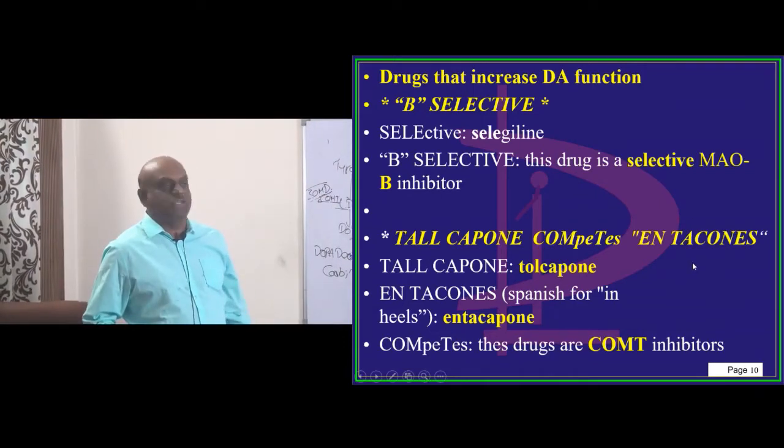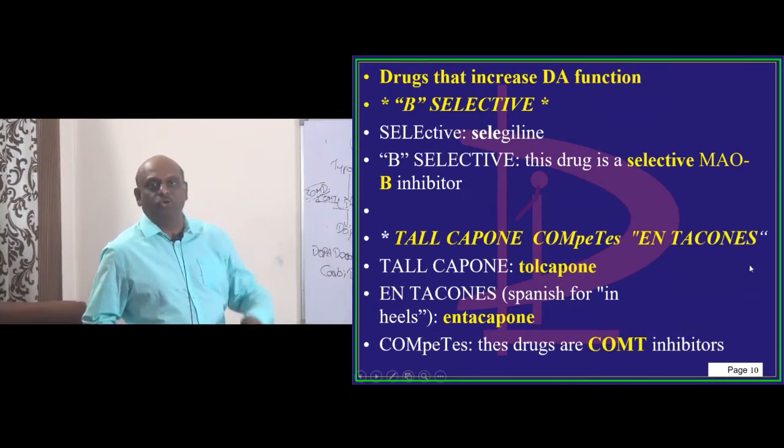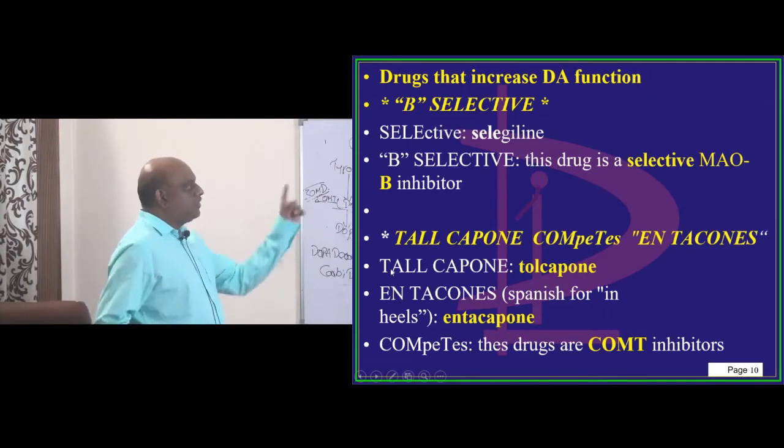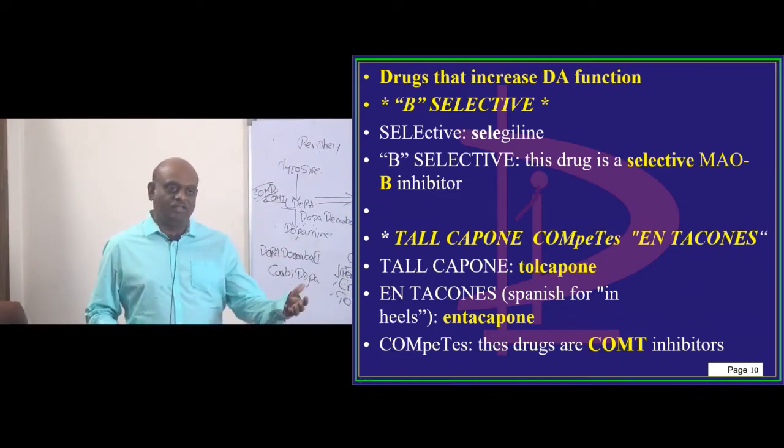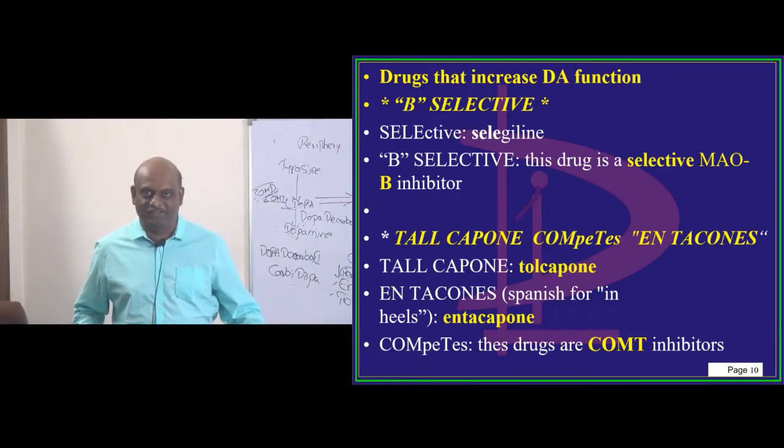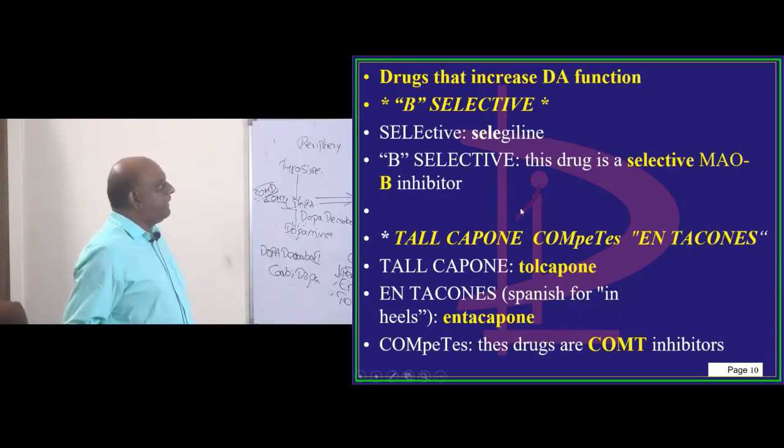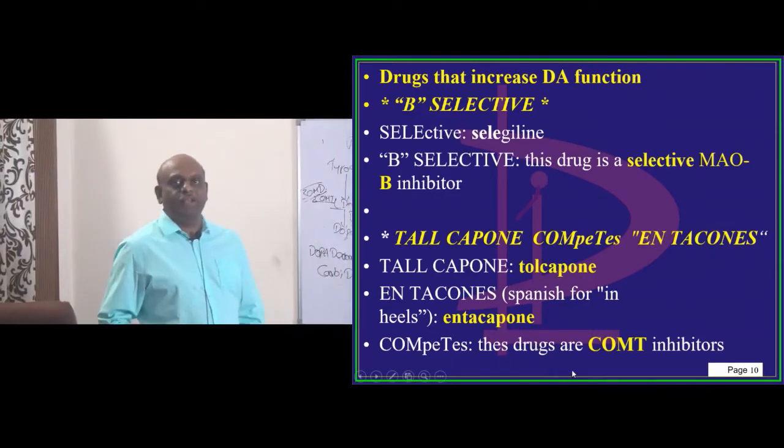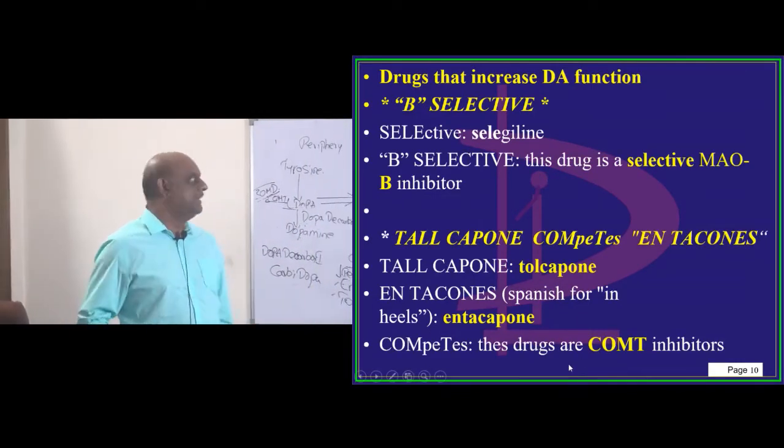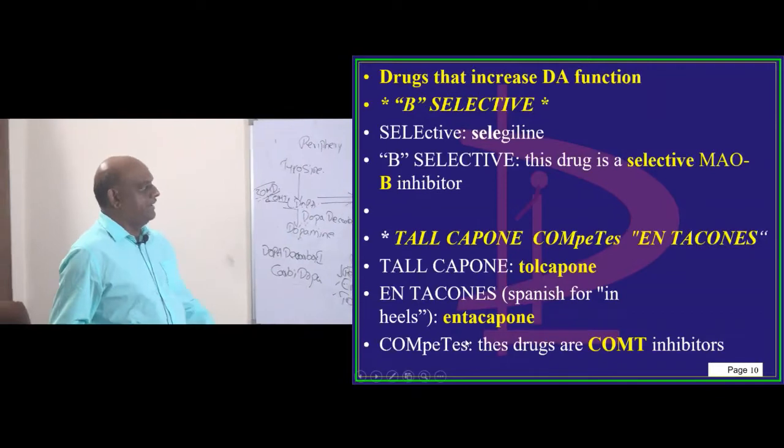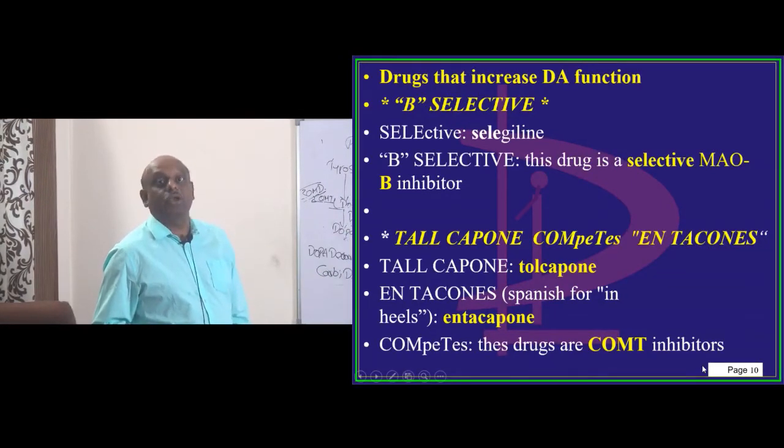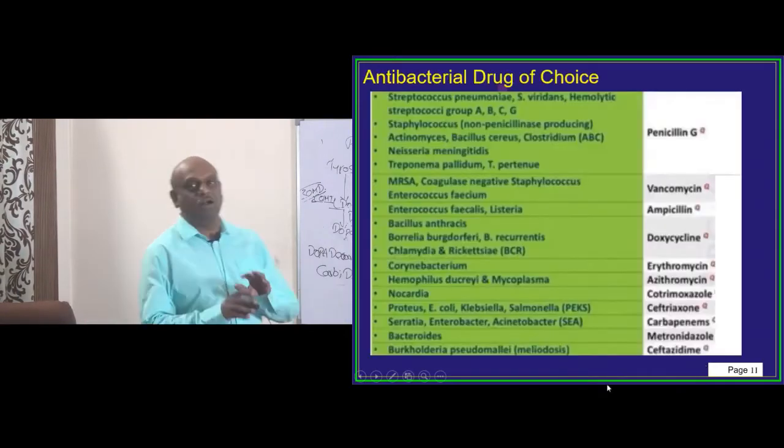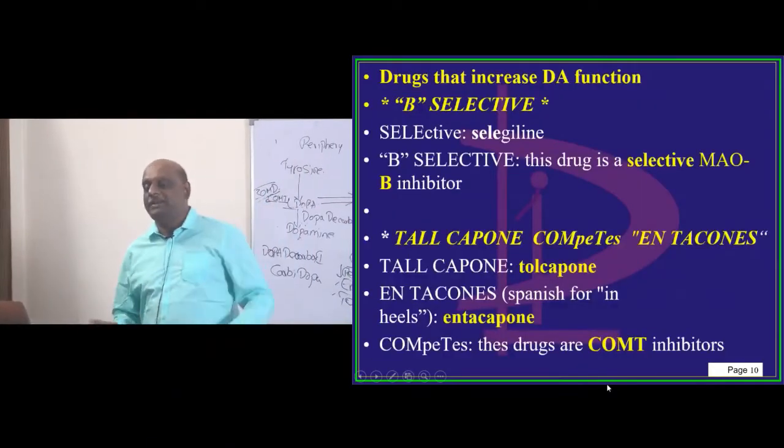Then, tolcapone competes entacapone is another way of remembering. Tolcapone - capone is that guy who is a gangster. There is a movie also called Capone. You can remember, tolcapone is tolcapone. Entacapone, in Spanish it means in heels. So they compete with the COMT. They are called COMT inhibitors.